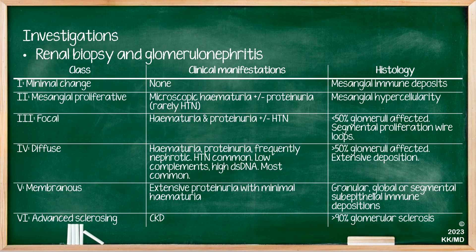In terms of investigations, you really want to get the diagnosis sooner rather than later, and this is where tissue biopsy — especially if there is renal involvement — will be useful. It is quite important to be familiar with the classification of glomerulonephritis that can present secondary to lupus. This is broadly divided into six categories.